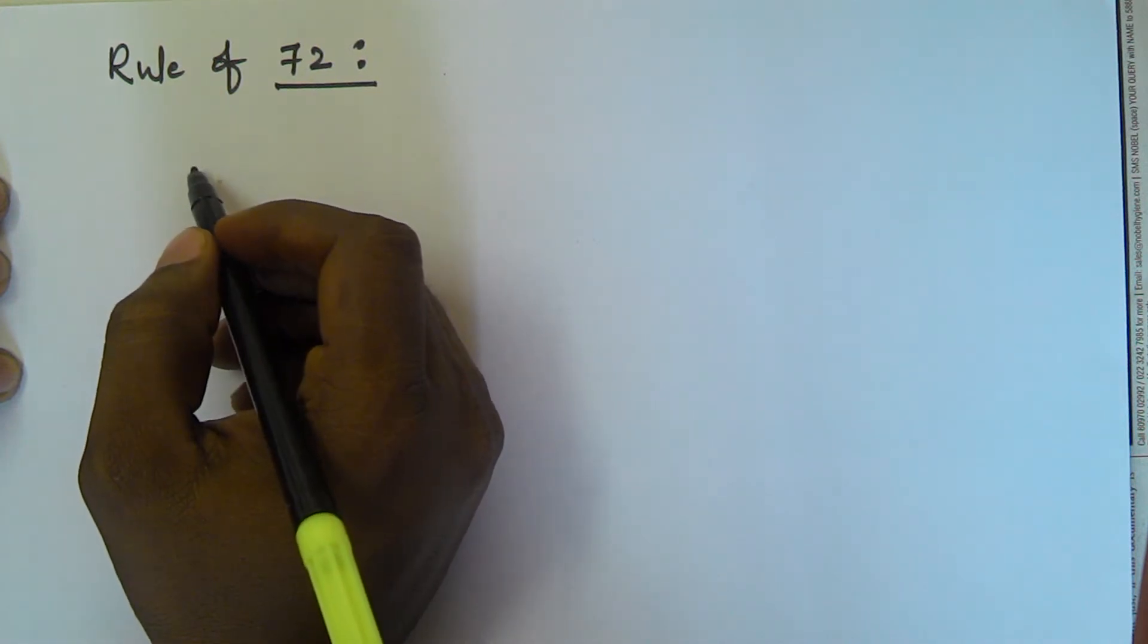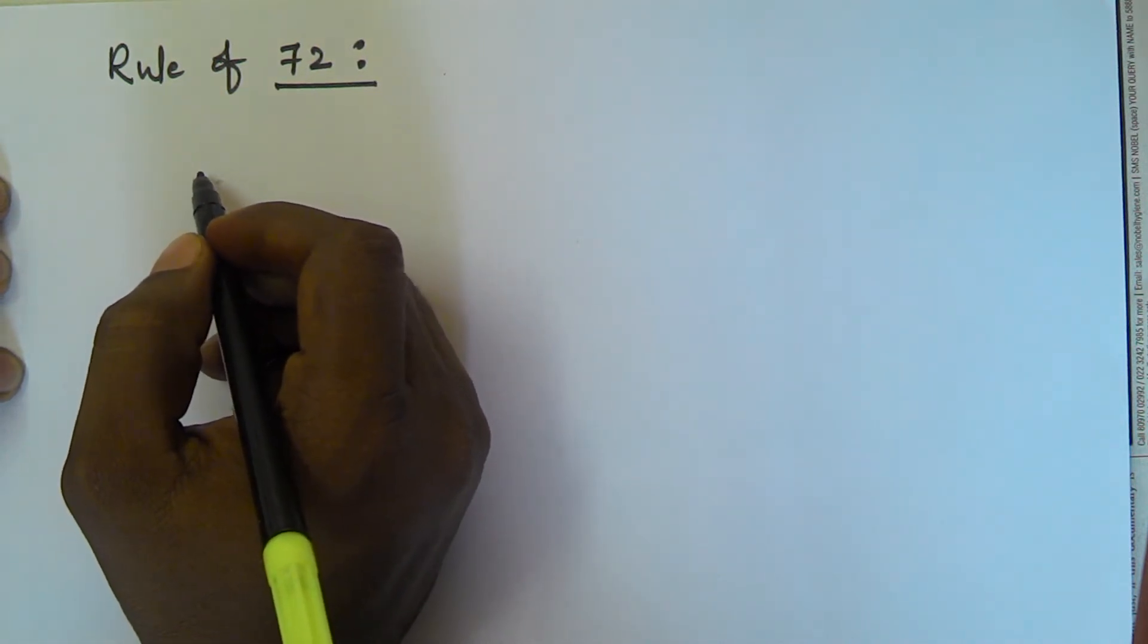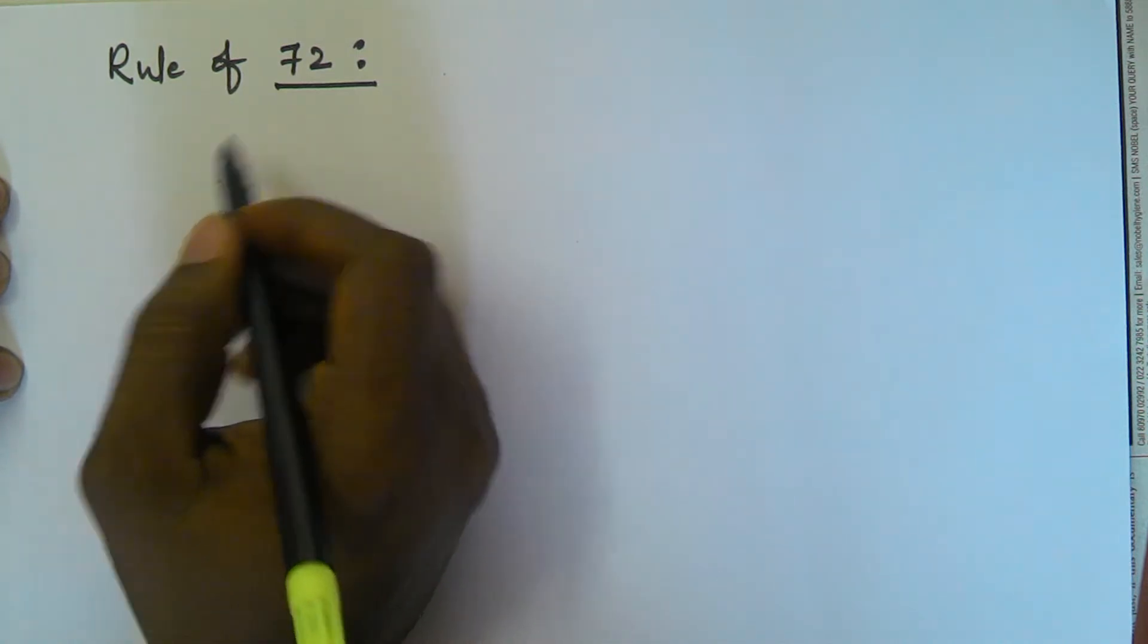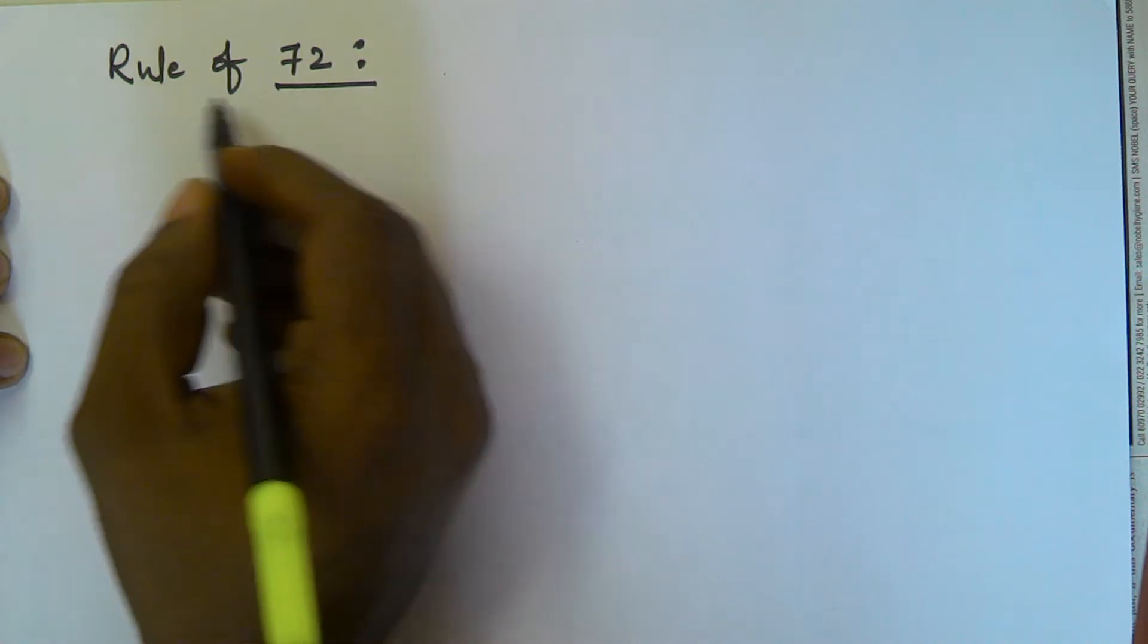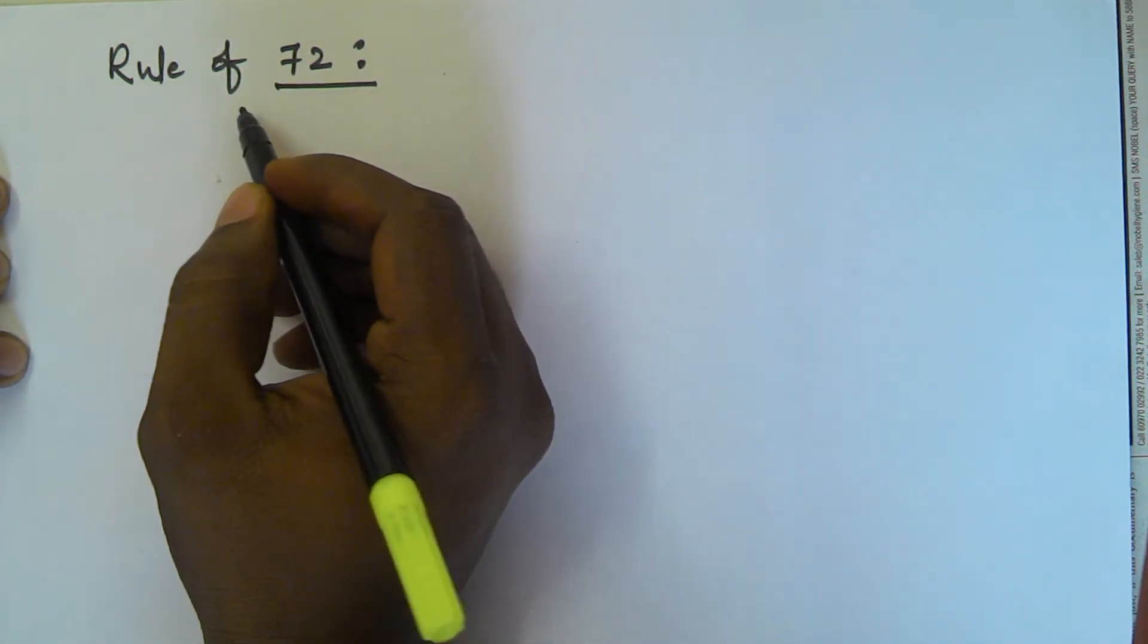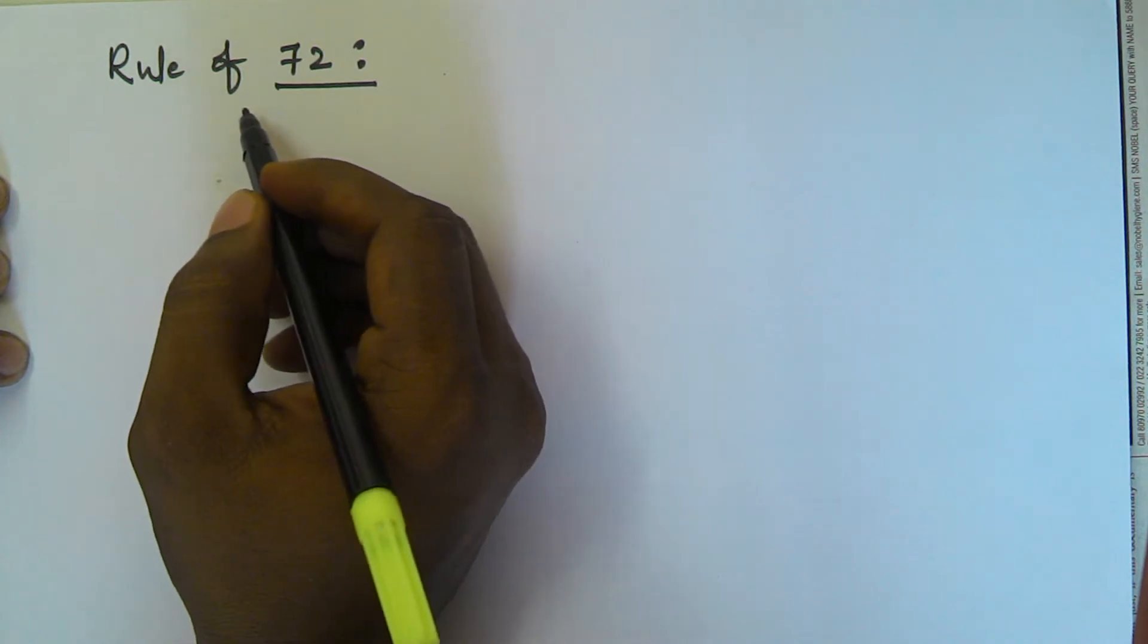This rule is used to find after how many years the invested amount is going to be doubled. So in that case, to find after how many years the amount will be doubled, for that purpose we use rule of 72.